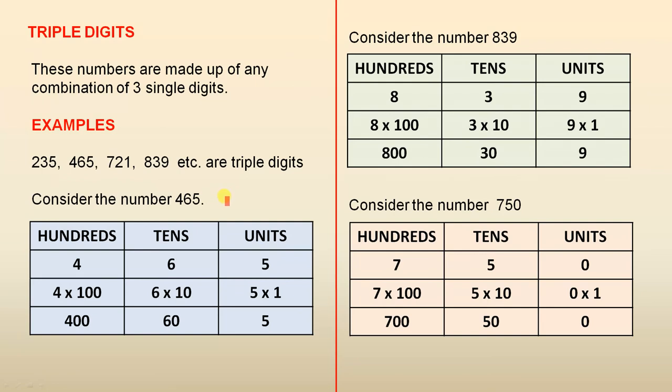Consider the number 465. Now the 5 is in the units column, which means it's 5 1s, which means the value is 5. The 6 is in the tens column, which means it's 6 tens, and the value is 60. And the 4 is in the hundreds column, which means it's 4 times 100, and the value is 400.